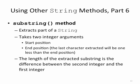Substring method will extract part of a string. It takes two arguments, the start position and the end position. What you have to know about the end position is that the last character extracted will be one less than the end position. It starts at the start position and goes all the way up to, but not including, the end position.